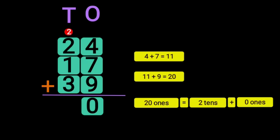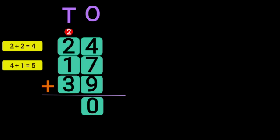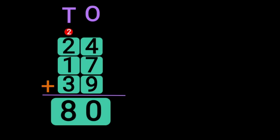Now begin the addition of the digits in the 10's place: 2 plus 2 gives you 4, 4 plus 1 gives you 5, and 5 plus 3 gives you 8. So the sum of the three two-digit numbers 24 plus 17 plus 39 gives you the answer 80.